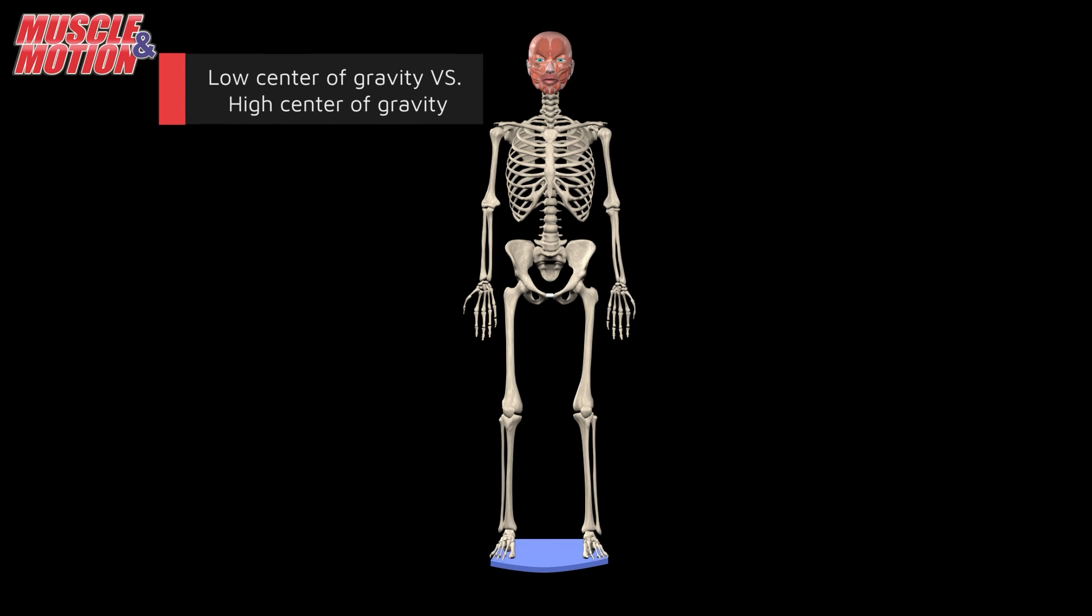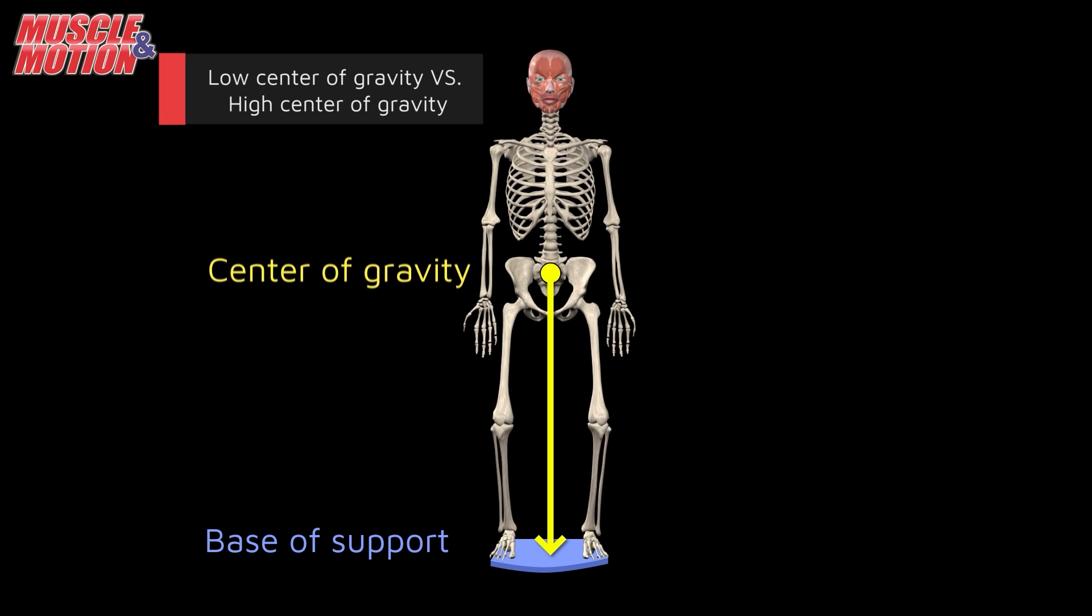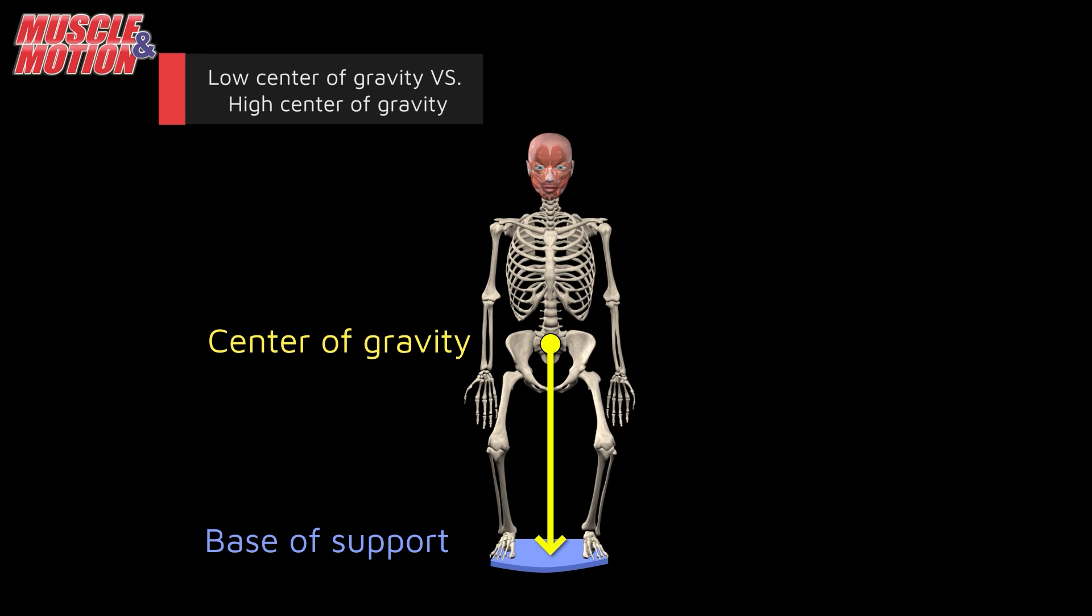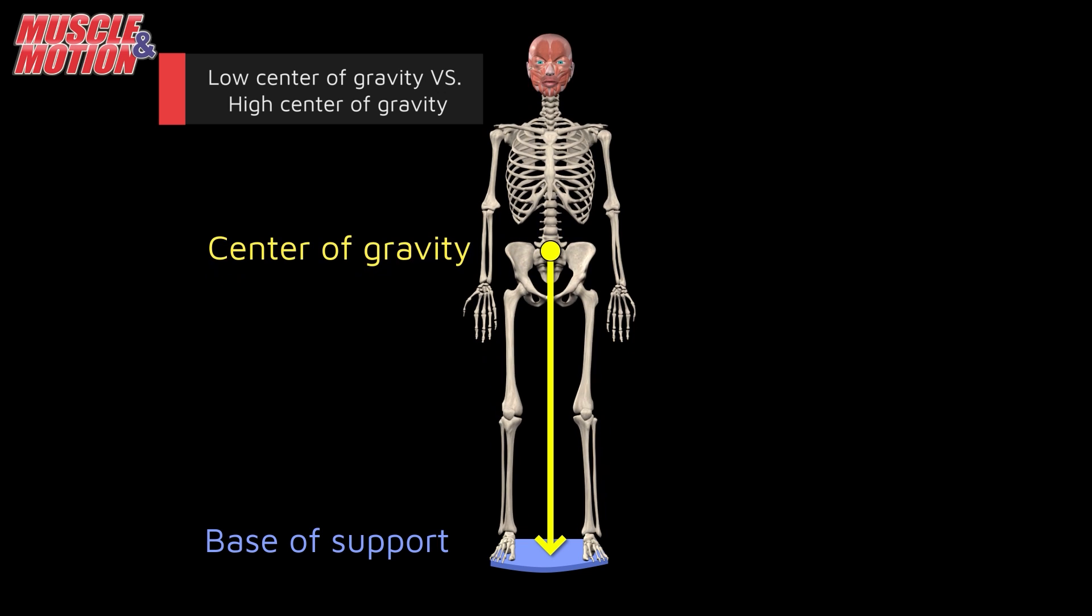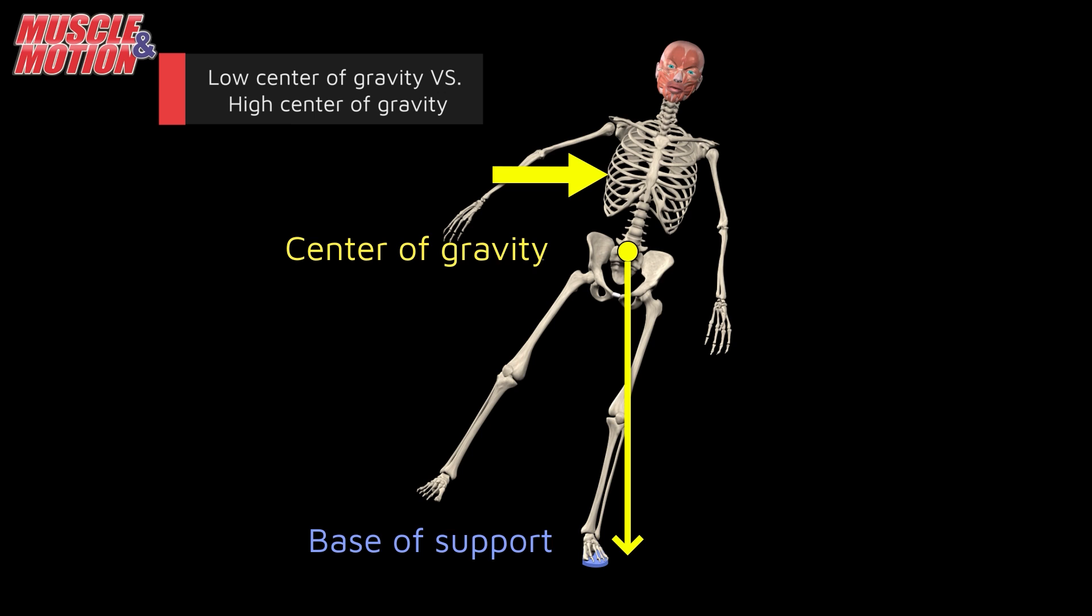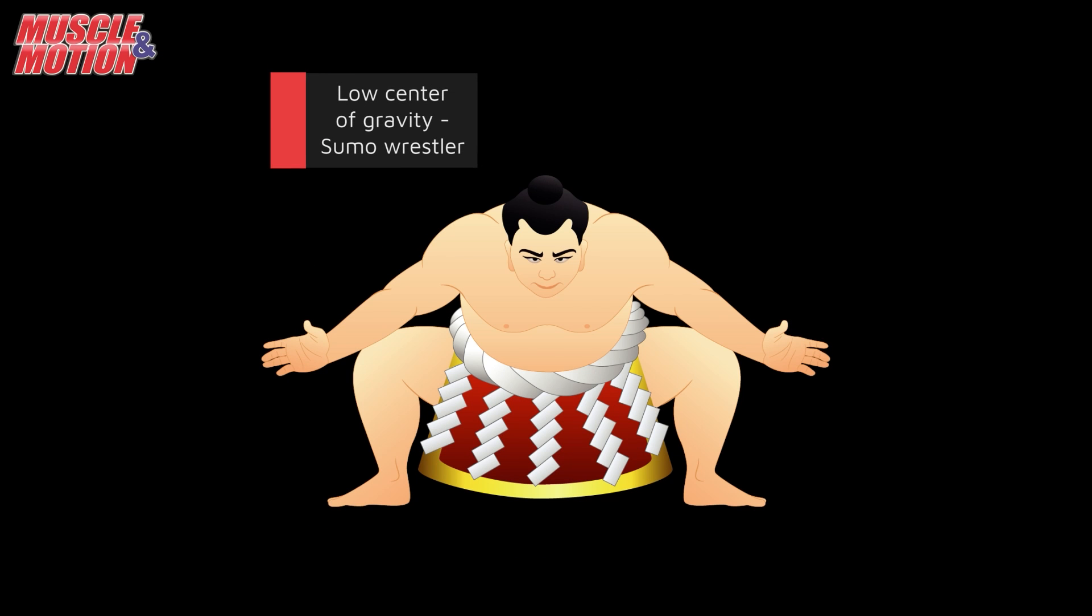Low center of gravity versus high center of gravity. In sumo wrestling, wrestlers purposefully lower their center of gravity by adopting a deep, wide-legged stance. This low center of gravity and increased base of support provide exceptional stability, making it incredibly challenging for opponents to push and topple them over during a match.